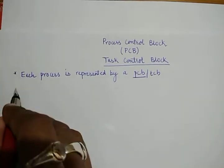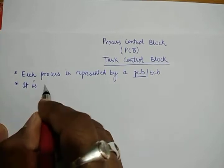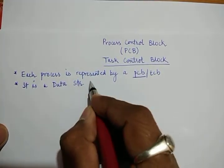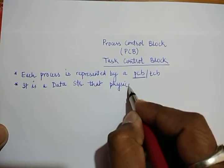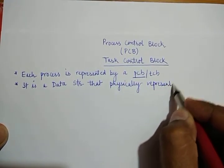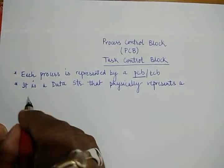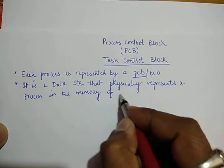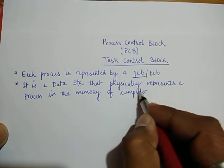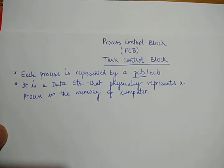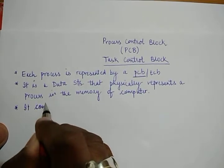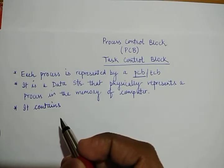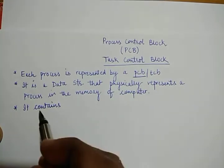The PCB is a kind of data structure that physically represents a process in the memory of a computer. It is used to represent the physical structure of a process in memory. It contains many pieces of information, since when a process is running in the computer system it consists of various information associated with it, and the PCB is used to represent that information.